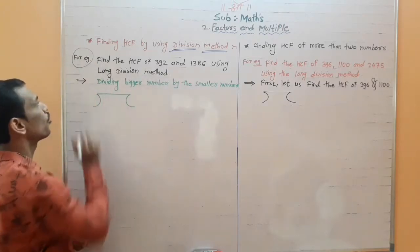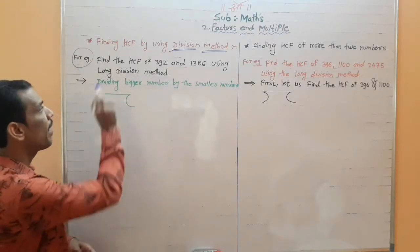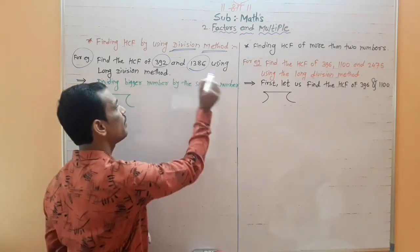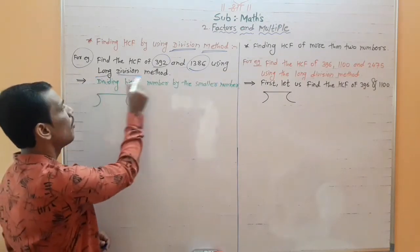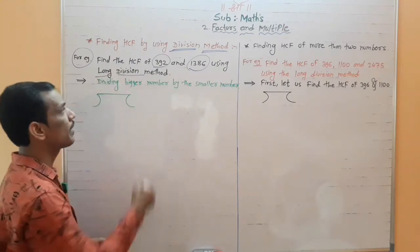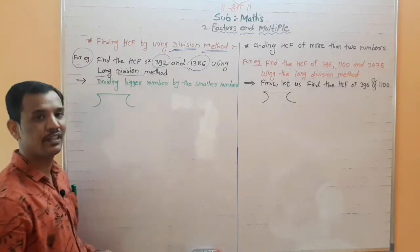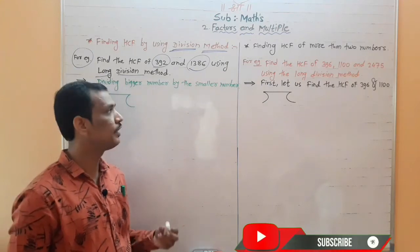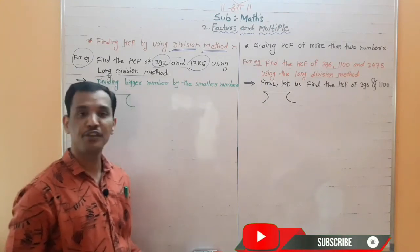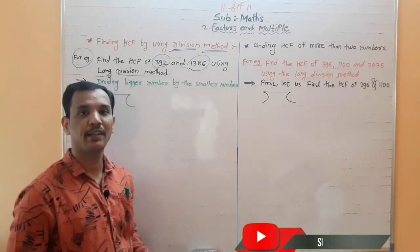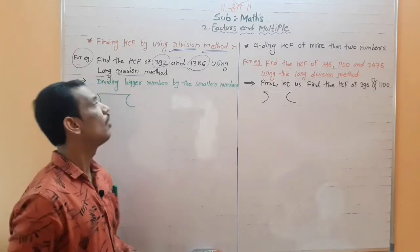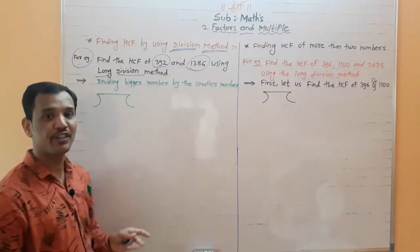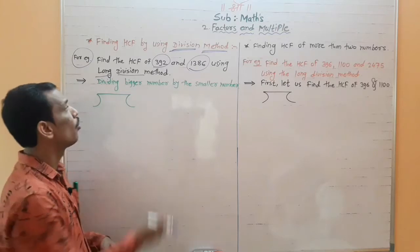In this example we will find the HCF of 392 and 1386 using a long division method. Both methods are very easy and good. If you understand them you can easily find HCF, but your calculation must be perfect. For the long division method, there are three steps to go through.